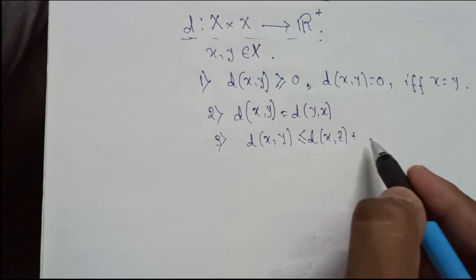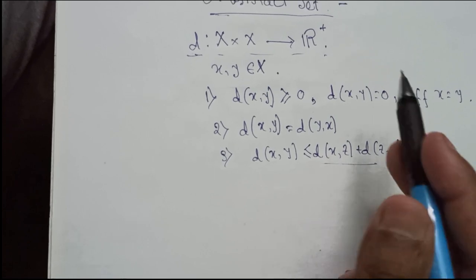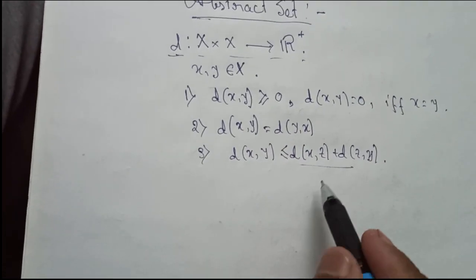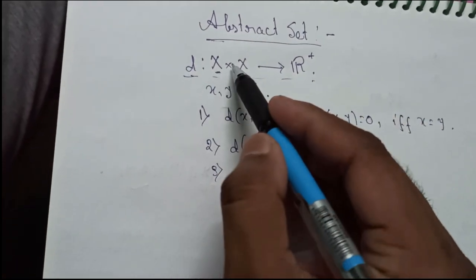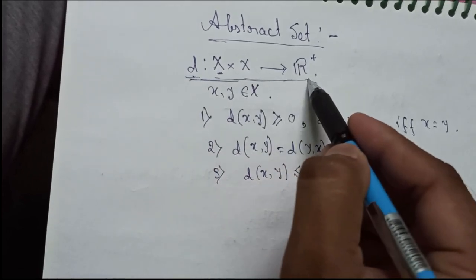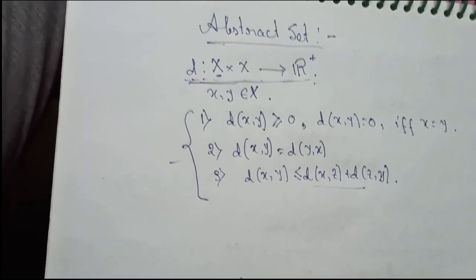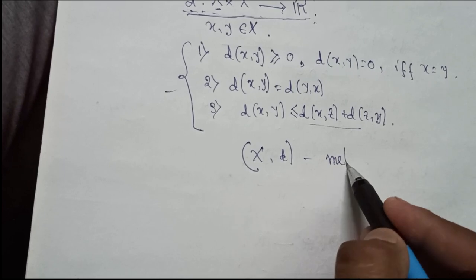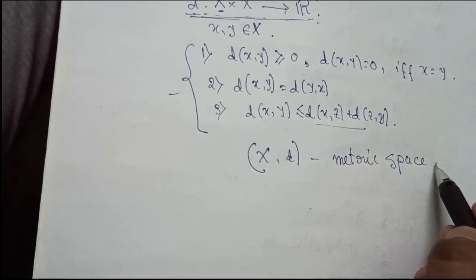This is the triangle inequality which I demonstrated before also. Now this set X and this function defined on that set, if that function follows these three properties then together this pair (X, d) will be called a metric space.